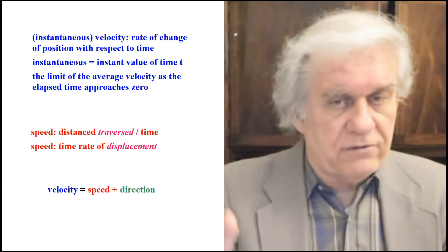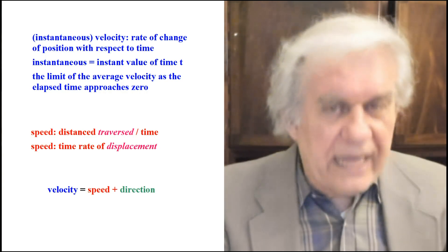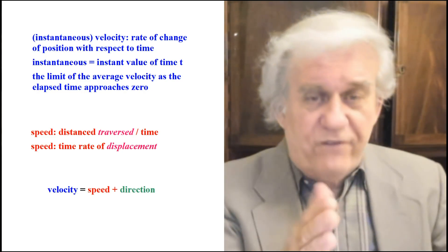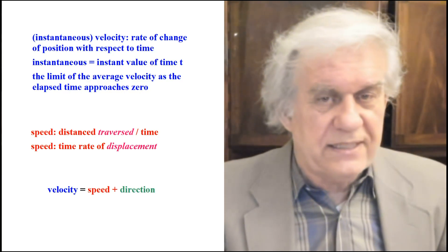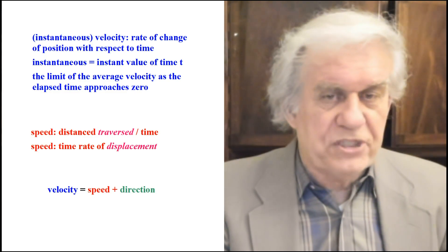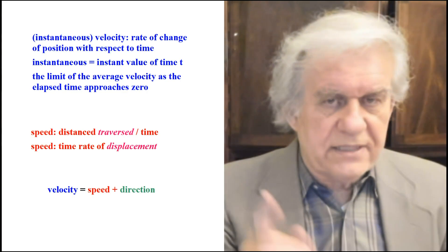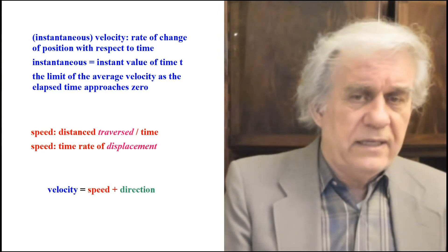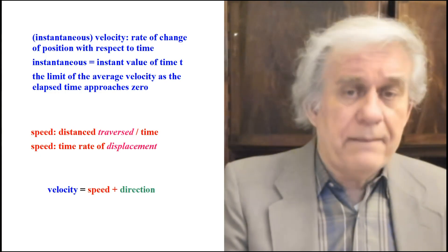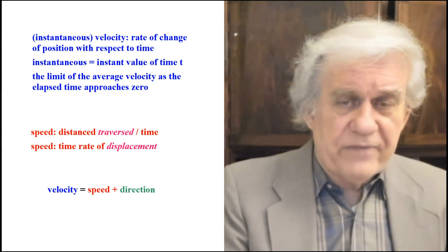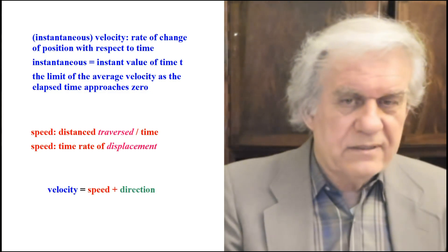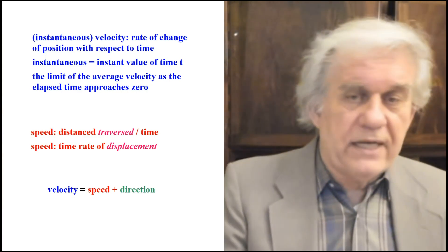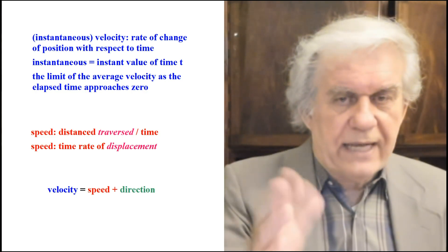Distance traversed or traveled — not static separation — is what distance means in mathematics. Speed is the time rate of displacement, and you have to have displacement to use the word 'speed' in mathematics. Displacement and distance traveled are the same thing in mathematics. There is no purely qualitative separation gap — no static concept at all. So velocity is speed plus direction; take direction away and you have speed.